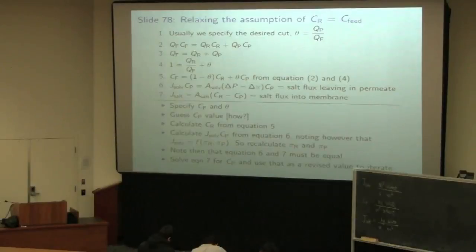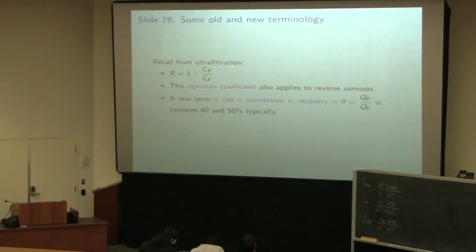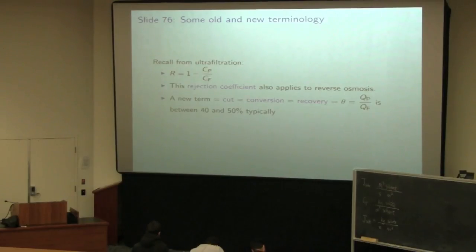Continuing from where we left off with membranes in the last class. One important note from last time, slide 76 has an error in the model for the rejection coefficient R. Please write your notes as follows: R is one minus the permeate concentration over the feed concentration. The denominator should be CF, not CR - the retentate concentration I had previously.